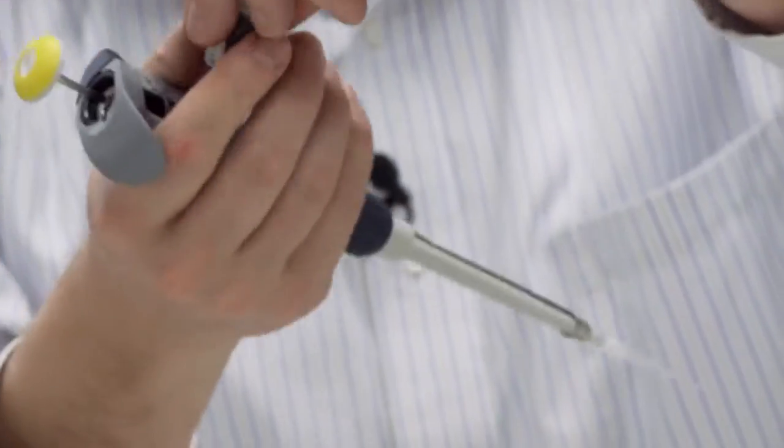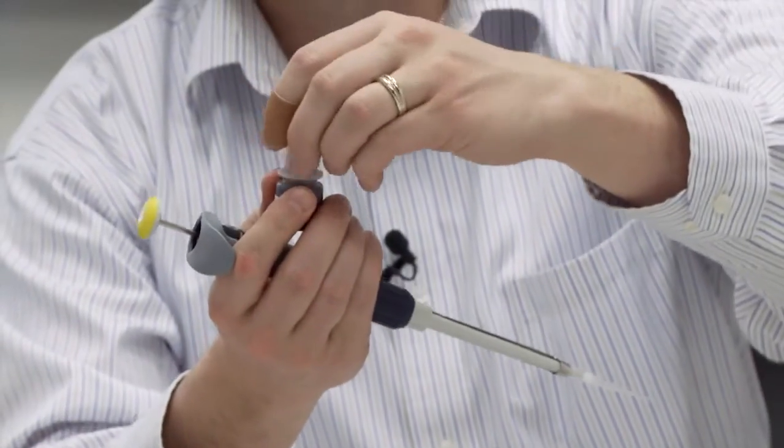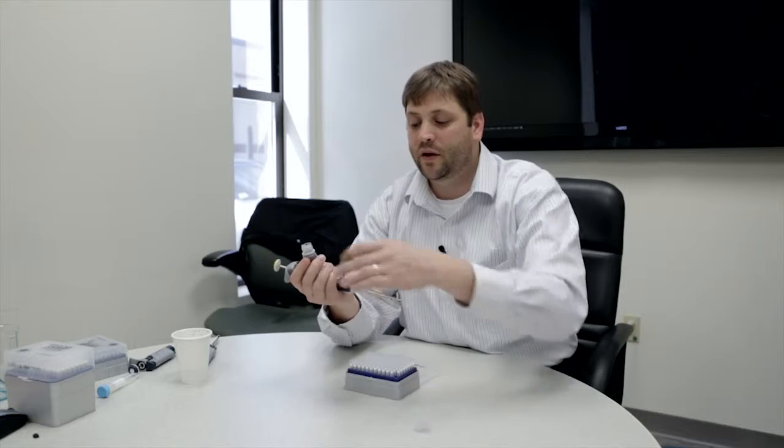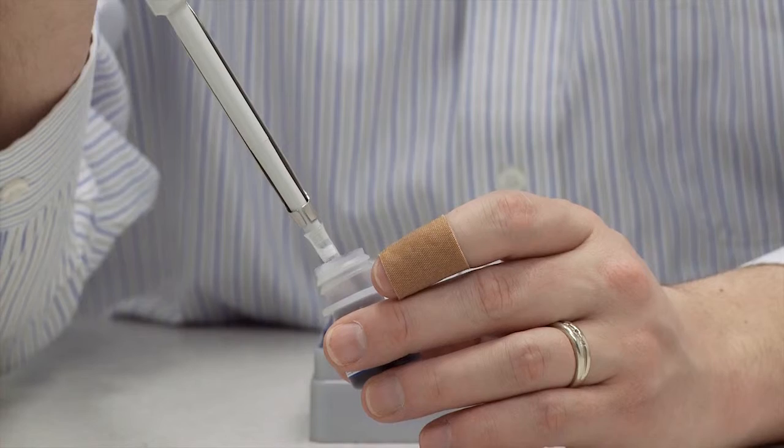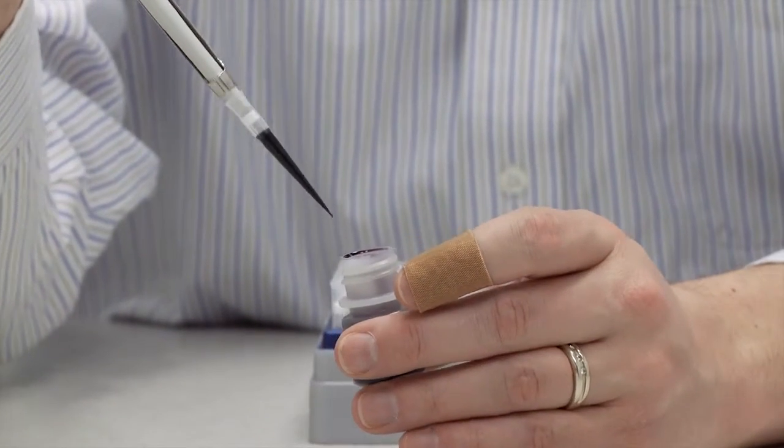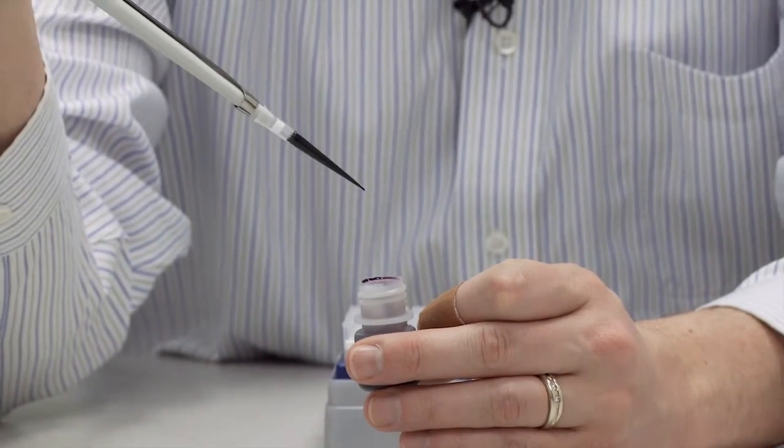And what I'm going to use this time is a 6x loading dye. This is a very viscous material, just to demonstrate a point of the quality of the plastic Denville Scientific uses. I take a draw of this 6x loading dye into my pipette tip.